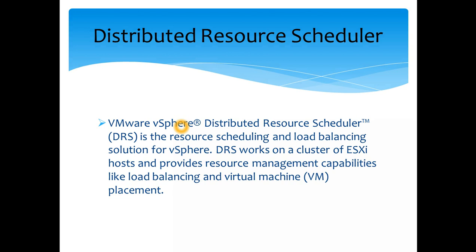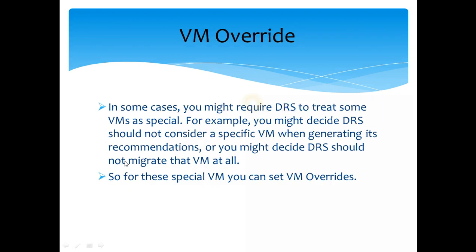So what if we have DRS running and we do not want a particular VM to move? It could be a critical VM, or an application like SQL Server, and you do not want it to move because losing a ping can cause interruption to the workload running on that VM. The solution is called VM overrides.